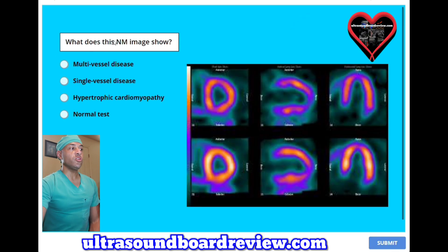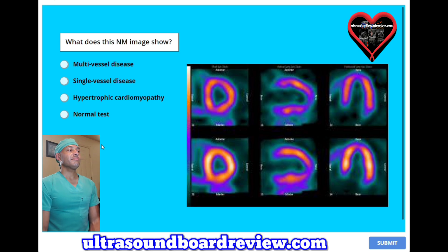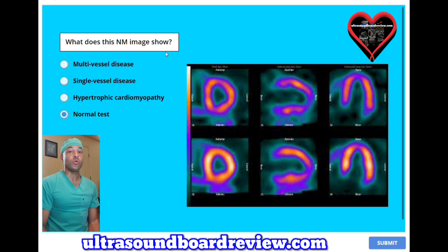What does this nuclear medicine image show? A, multi-vessel disease. B, single-vessel disease. C, hypertrophic cardiomyopathy. Or D, normal test. The answer is D, normal test. A nuclear medicine examination is really good for determining single-vessel disease.